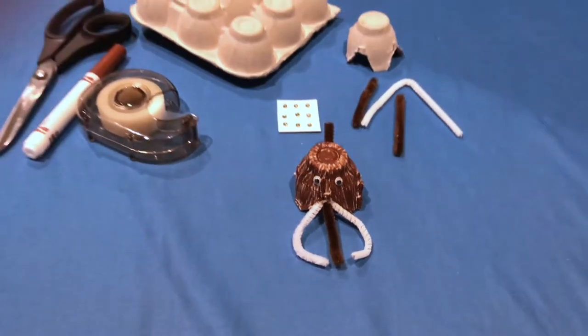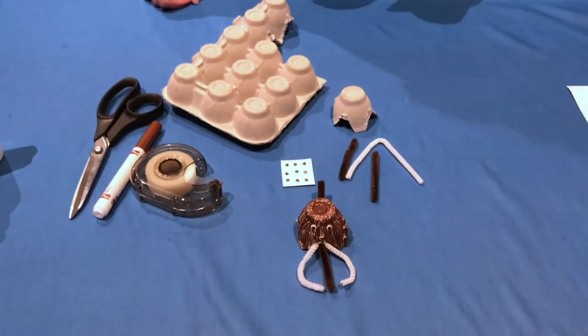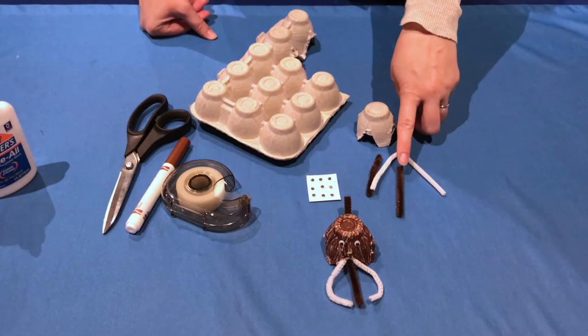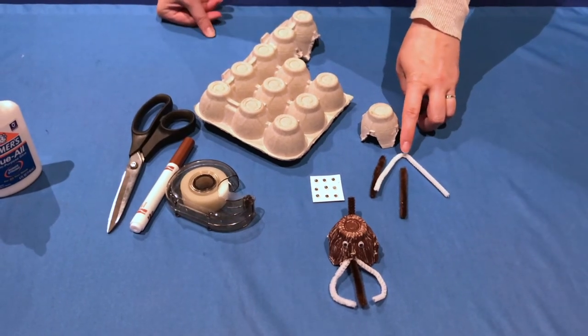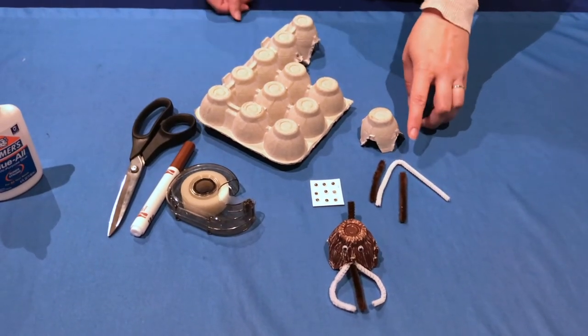So for this project you'll need an egg carton, pipe cleaners. I have brown and white. Now if you don't have pipe cleaners at home you can use twist ties from a package of bread.